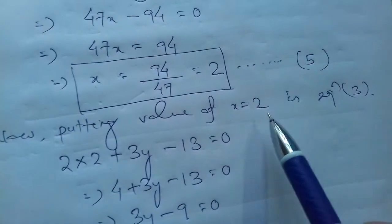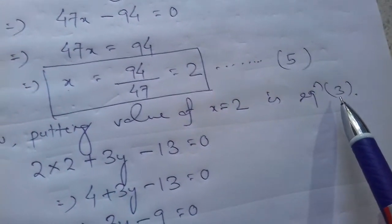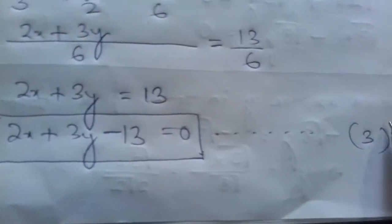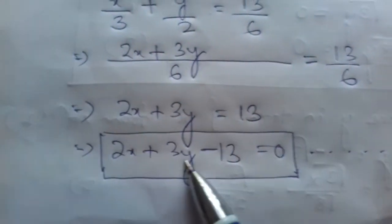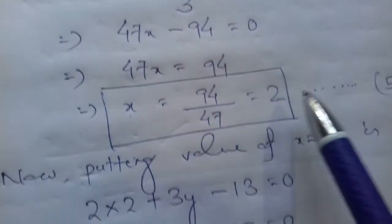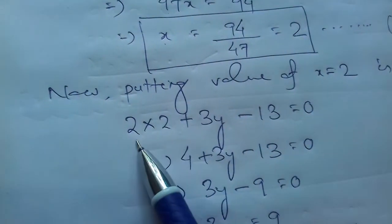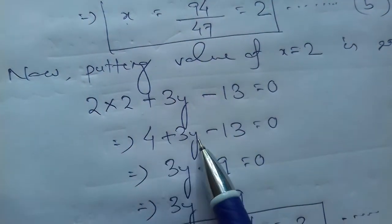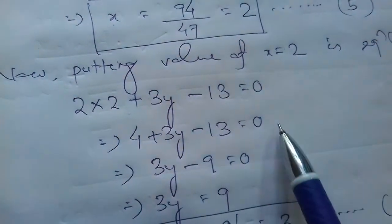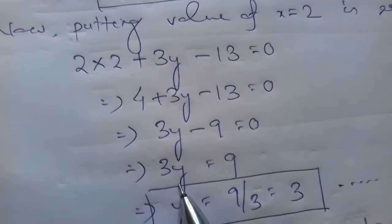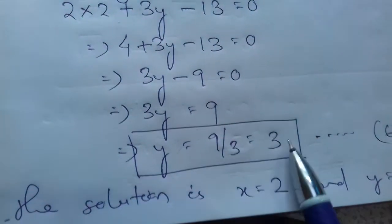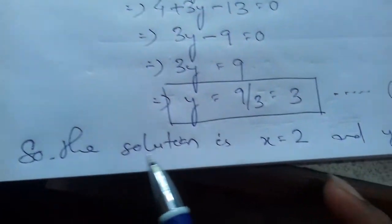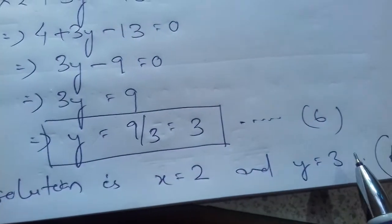Putting the value x = 2 into equation 3: 2x + 3y − 13 = 0 becomes 2(2) + 3y − 13 = 0, so 4 + 3y − 13 = 0, giving 3y − 9 = 0, and y = 9/3 = 3. So the solution is x = 2 and y = 3.